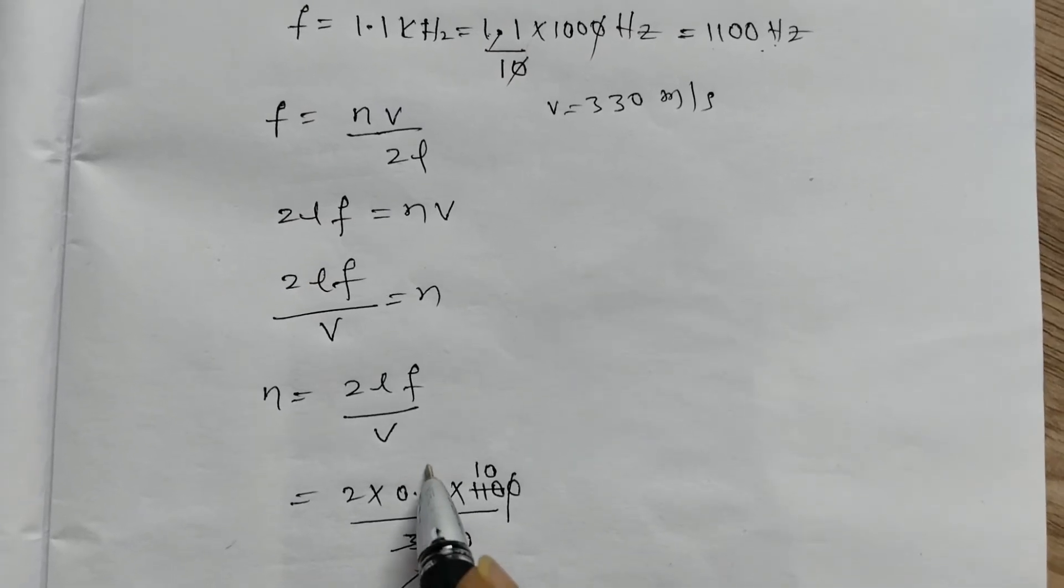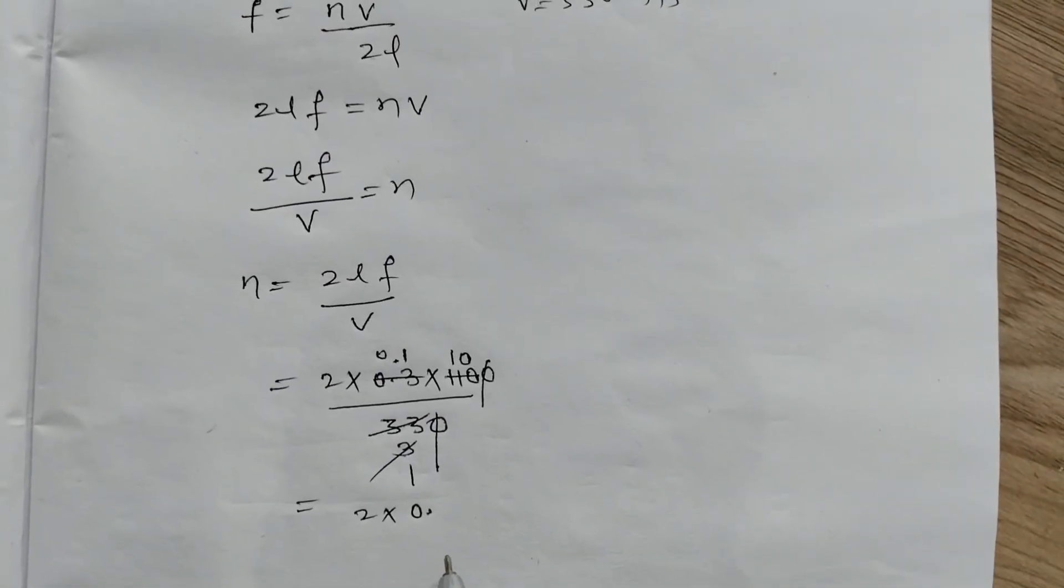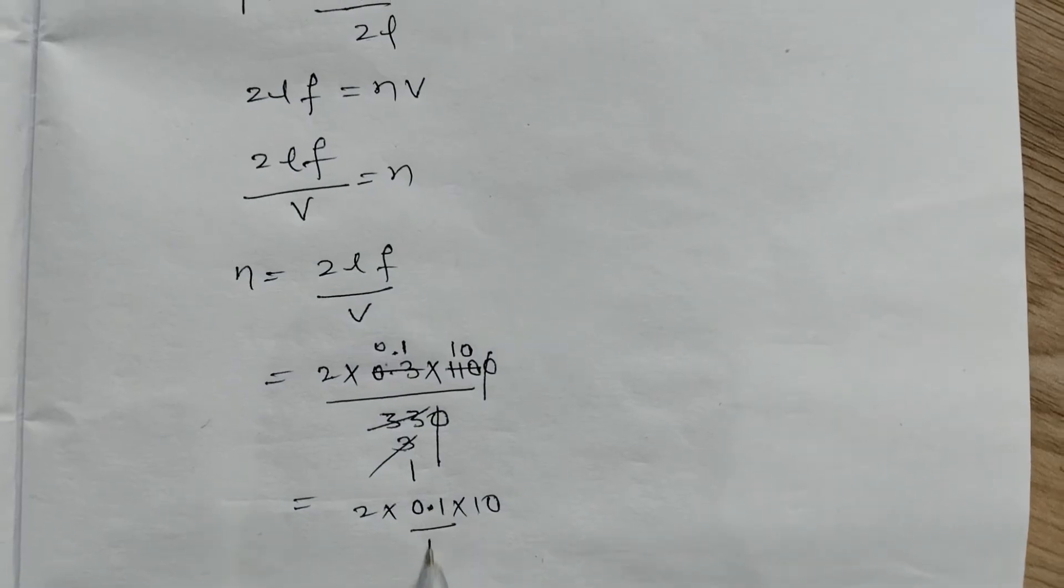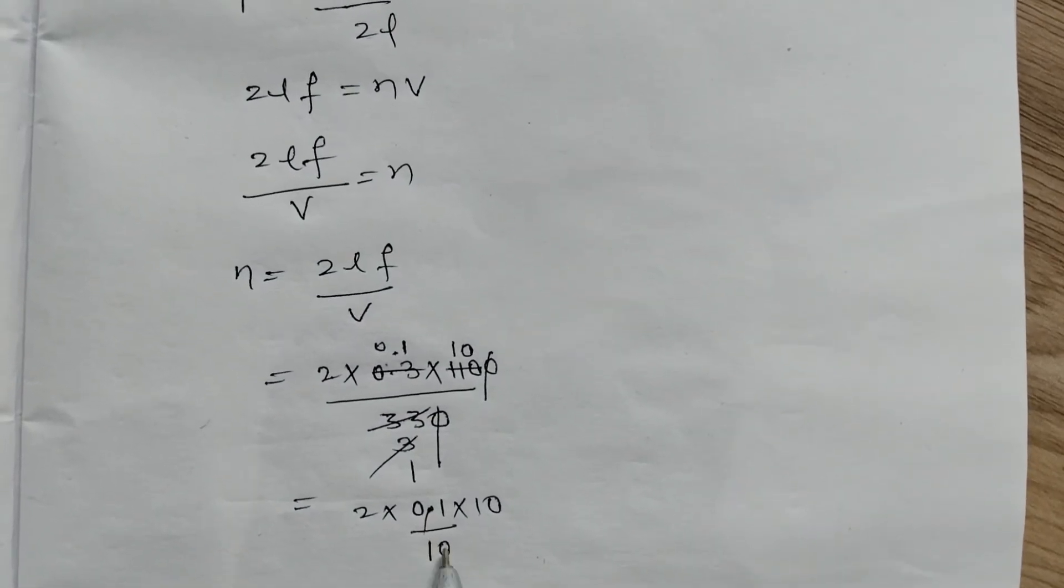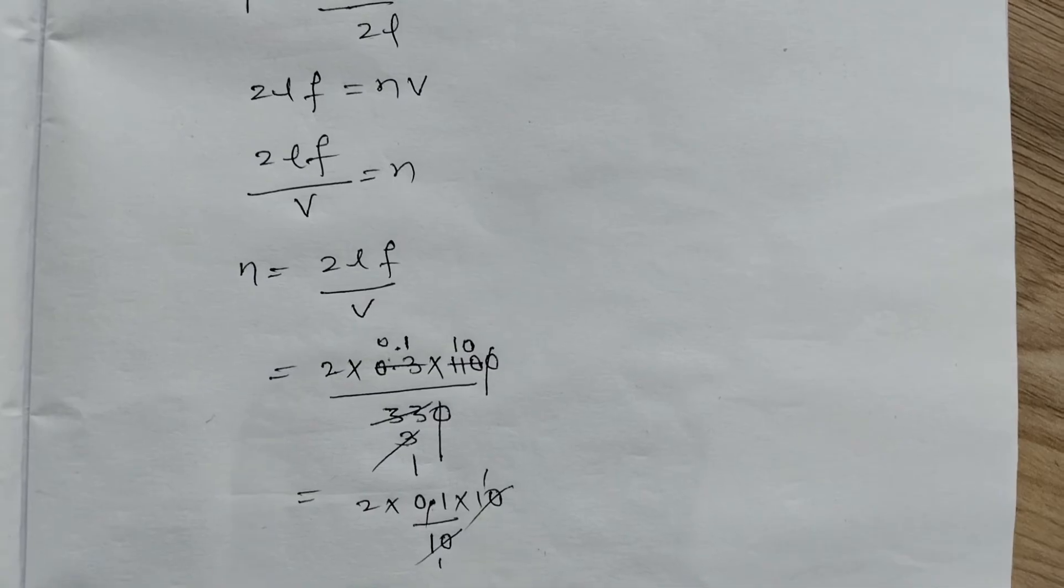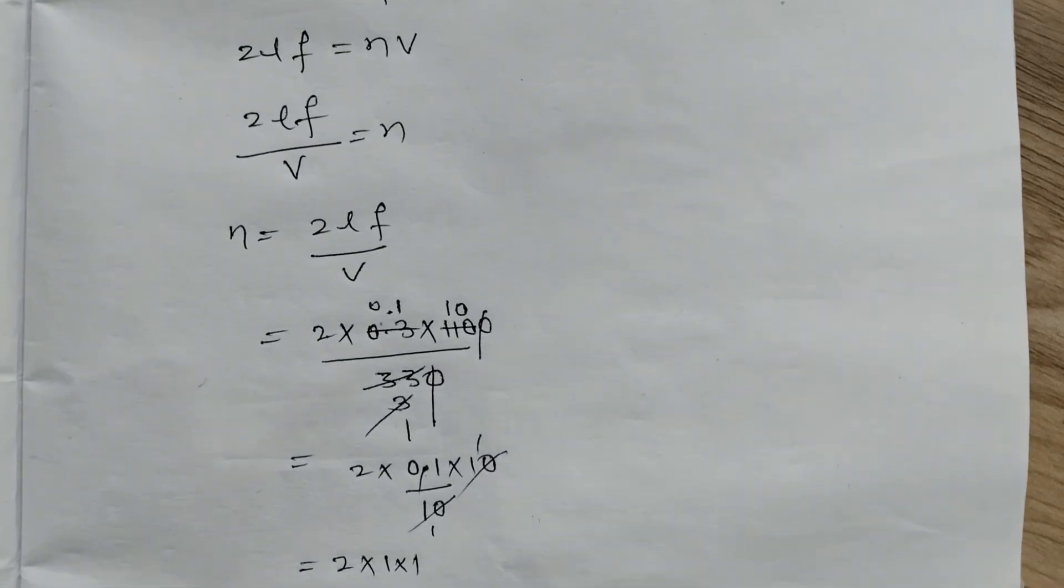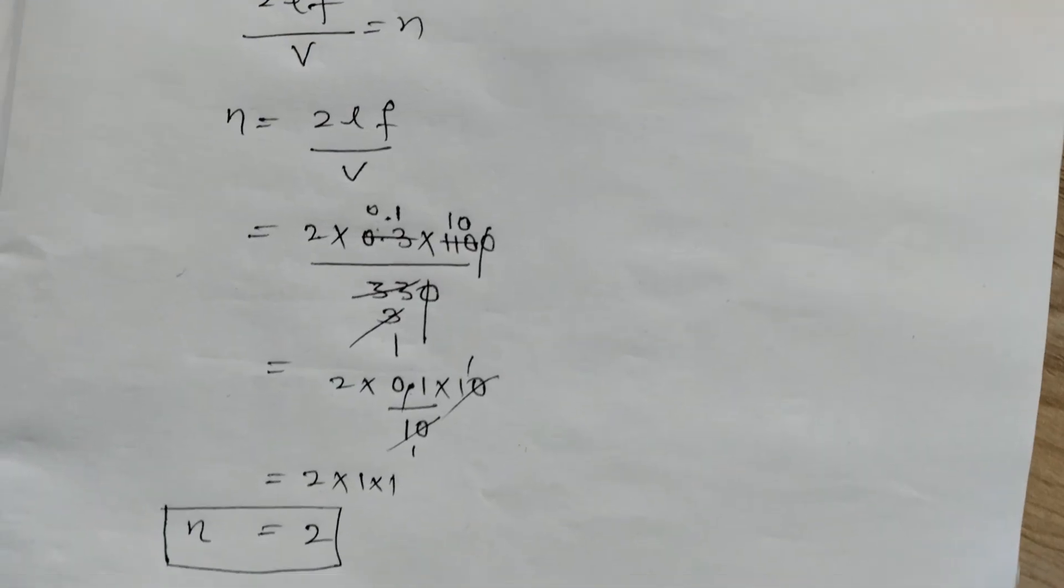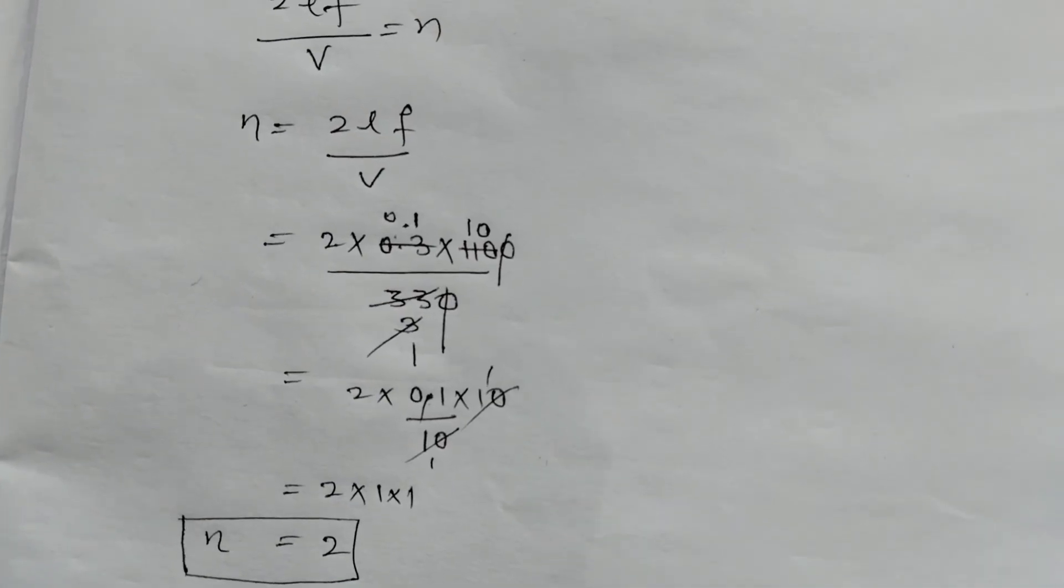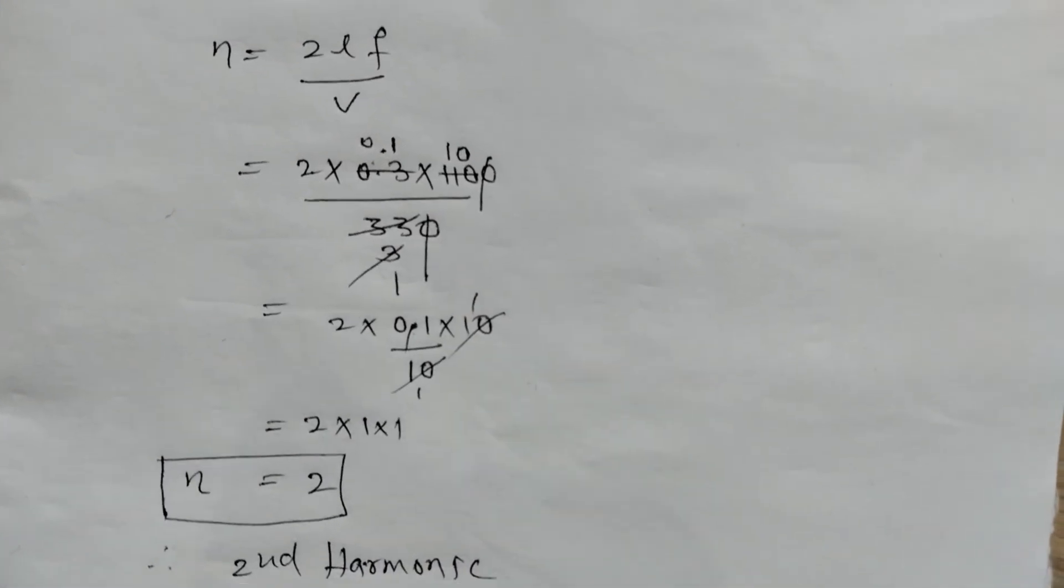After canceling zeros and simplifying: 2 into 0.1 into 10. Canceling the 10s gives 2 into 1 into 1 equals 2. So n equals 2. At the second harmonic, the frequency is 1100 hertz. Answer is second harmonic.